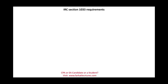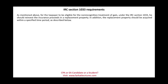Now let's look at the specific requirements for Section 1033. To be eligible for non-recognition under Section 1033, the taxpayer should reinvest the insurance proceeds in replacement property — that's required. If you keep the money, it becomes taxable, because the IRS says you have the ability to pay. In addition, the replacement property must be acquired within a specified period of time.